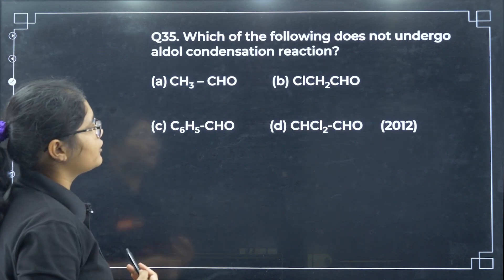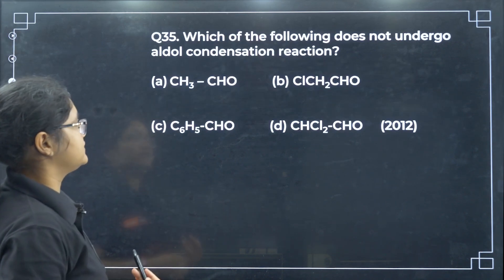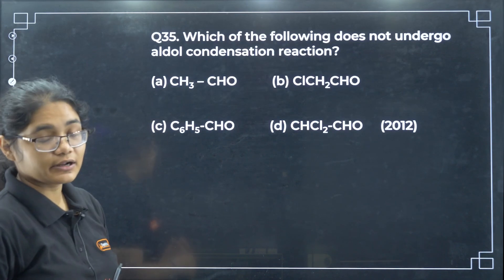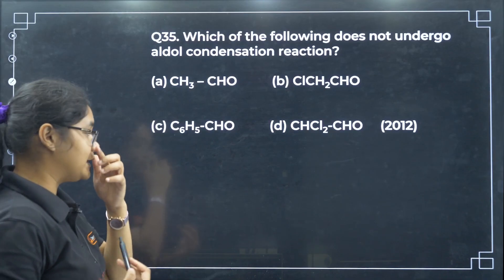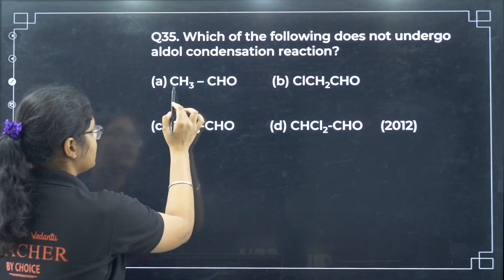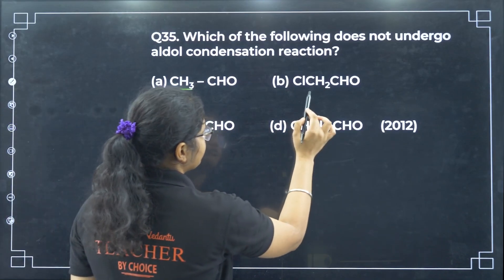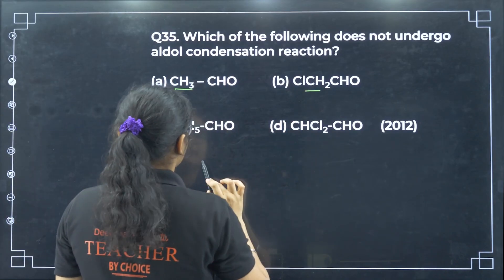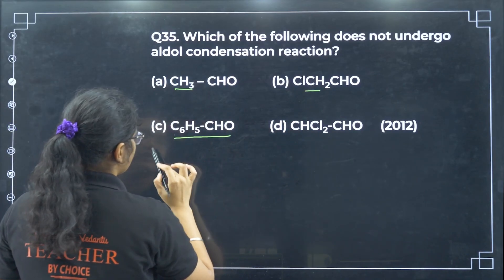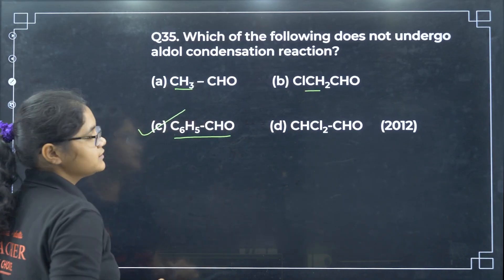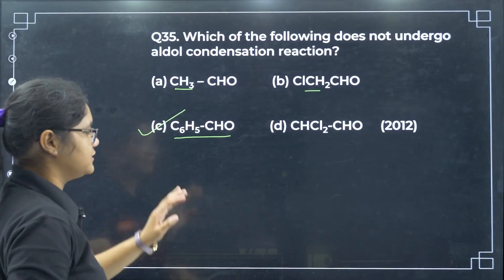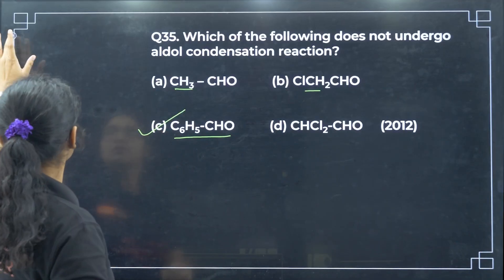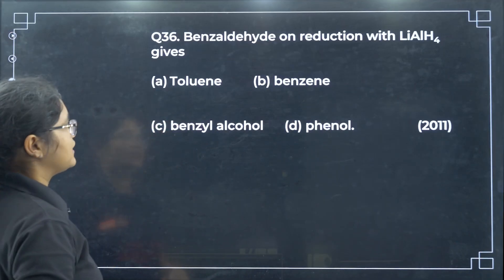Which of the following does not undergo aldol condensation? For aldol condensation we also need alpha hydrogen. The first two compounds have alpha hydrogen, but the third one has no alpha hydrogen — option C. That compound will instead undergo Cannizzaro reaction.